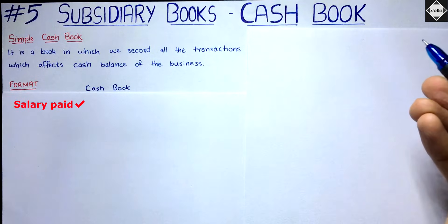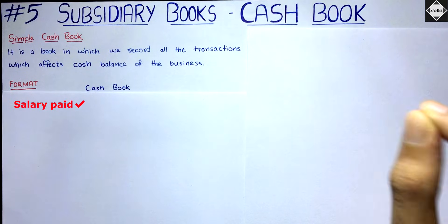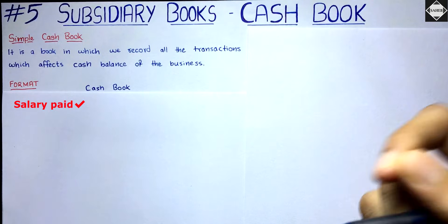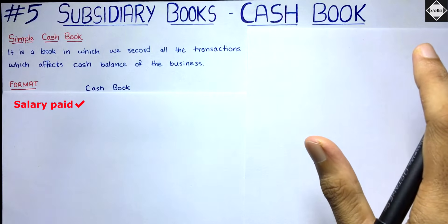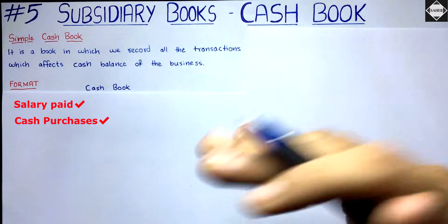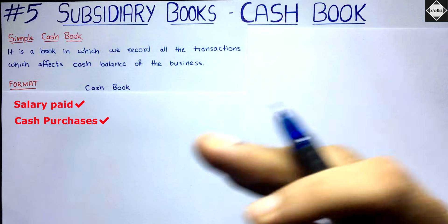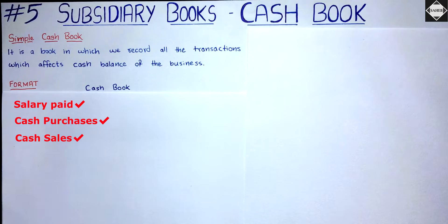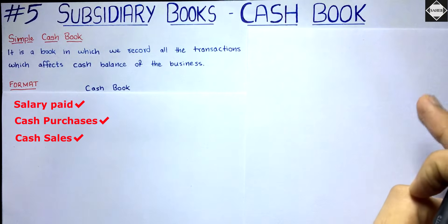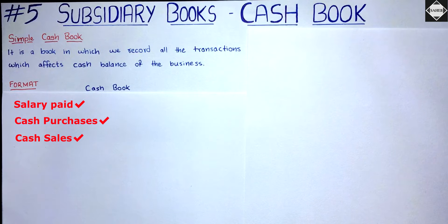For example, if you have paid salary to your employee in cash, cash is involved, so the original recording of this salary transaction will happen in the cashbook — no journal entry, nothing. Another example: if you have purchased goods in cash, it will be recorded in the cashbook. If you have sold goods in cash, that will also come in the cashbook. Cash purchases and cash sales do not go into the purchase book or sales book.